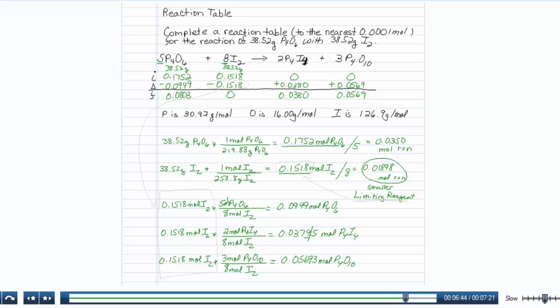So here's the important thing to notice. We found our limiting reagent. So in the delta row, we used that value, that 0.1518, and put it in the delta row. And for all of the other materials, we based the moles of other materials that we either reacted with or made off the 0.1518 moles of I2. That was our limiting reagent. That's all.